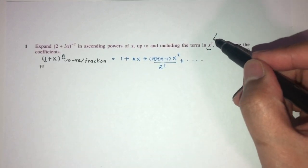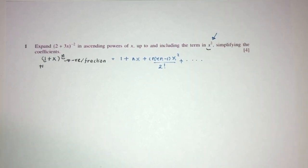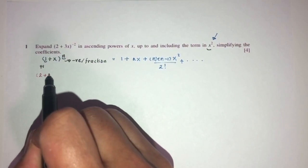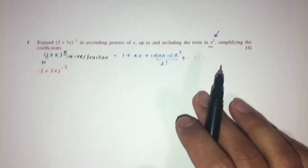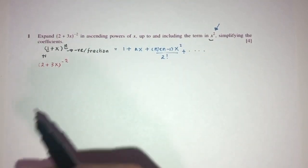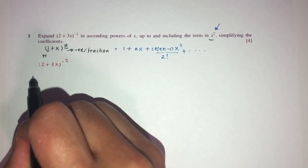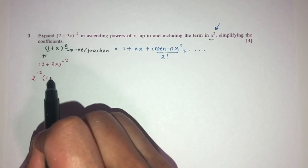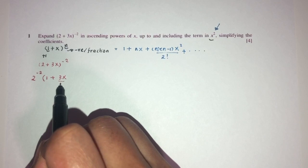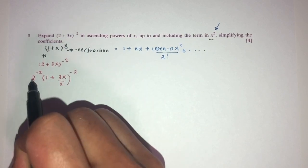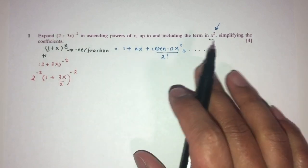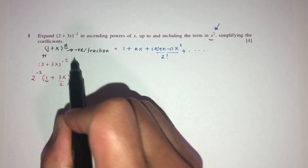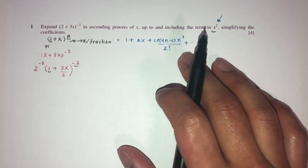Now let's observe what we have: (2 + 3x)^(−2). This is not 1, so we have to change that — take the 2 outside with its power. It becomes 2^(−2) · (1 + 3x/2)^(−2), because if you want to bring it back in you should get back the same thing. Now we can confirm this is plus 1 and the power is negative, so we can use the formula.